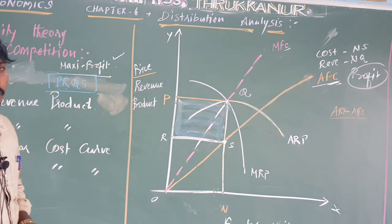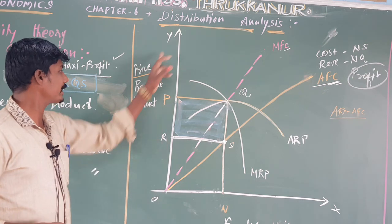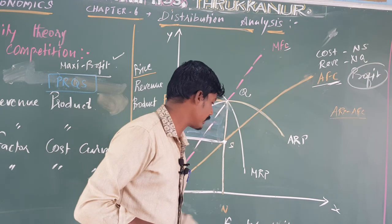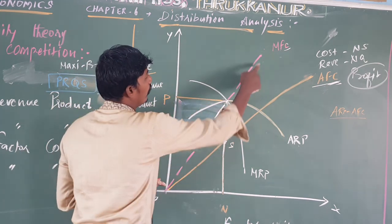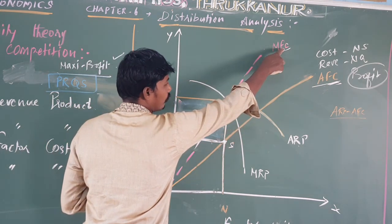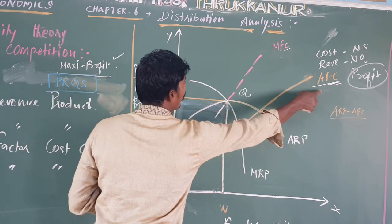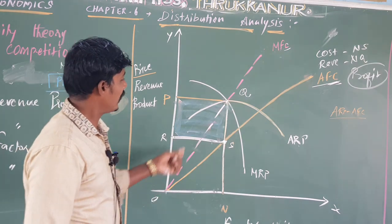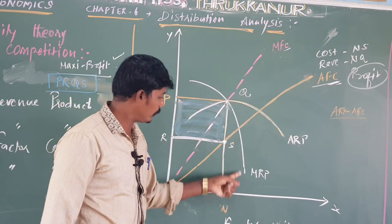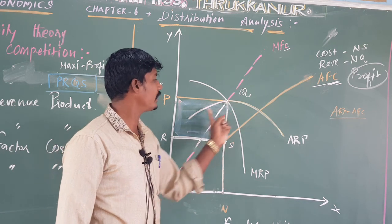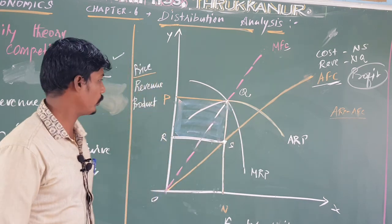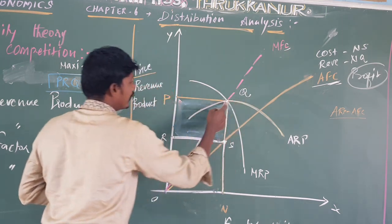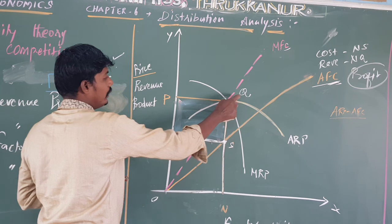Let me give an explanation of the diagram. On the O Y-axis: price, revenue, and product. On the O X-axis: factor unit. From left to right, the curves shown are: marginal factor cost (MFC), average factor cost (AFC). On the revenue side: marginal revenue product (MRP) and average revenue product (ARP), both drawn as inverse U-shapes.